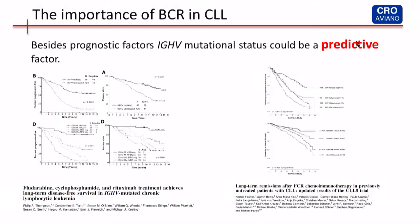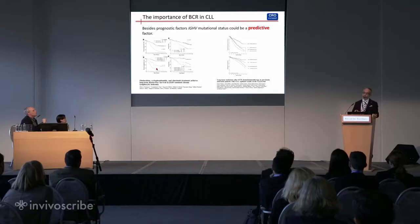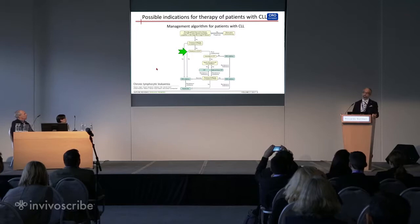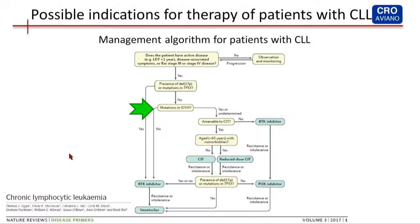Besides being a prognostic factor, IGHV could be a predictive factor. In a recent paper, the authors demonstrate that patients with mutated immunoglobulin treated with standard chemoimmunotherapy who achieve minimal residual disease after six months of therapy have free disease survival comparable to age-matched controls. Instead, patients with unmutated immunoglobulin seem to not benefit from standard immunochemotherapy. So in this context, the IGHV gene mutational status could predict the outcome of therapy.